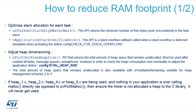One important note: xPortGetFreeHeapSize does not give you the biggest block you can allocate. You can still have 10 kilobytes of heap available but not be able to allocate a single 1 kilobyte block. The function returns the sum of all empty blocks, but those empty blocks can be scattered between already allocated parts of the heap. If each fragment is half a kilobyte, you can't allocate a new task requiring 3 kilobytes of stack. It's a double-edged sword — it tells you total empty space but not how much you can allocate at once.